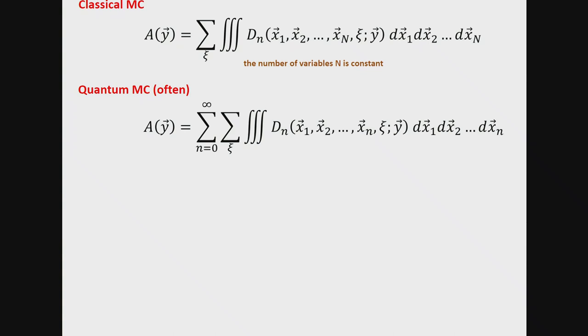Of course the other difference between classical and quantum is that D is not necessarily a positive number, but I already explained to you yesterday that that's not a big deal — you just separate D into modulus and sign. You can sample everything by modulus, then you measure the sign, and that's the only difference. Today I will be essentially assuming everywhere that D is positive, so don't worry about the sign. The difference between the two is that the number of integrations changes from term to term — if I change N from 0 to 10, I will face integrals of higher and higher dimensionality.